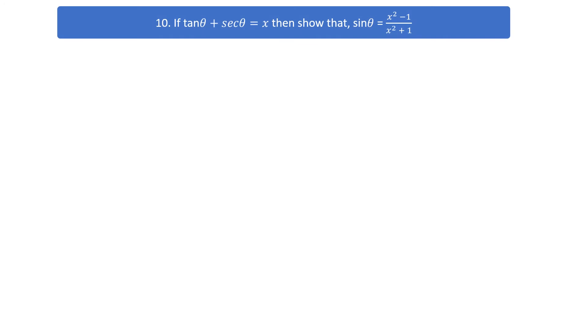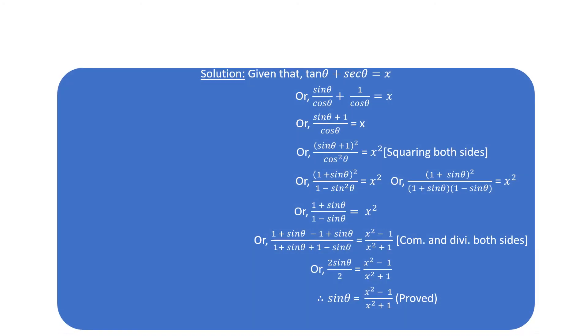Question number 10. If tan θ plus sin θ equals x, then show that sin θ equals x² minus 1 by x² plus 1. Solution: given tan θ plus sin θ equals x, and tan θ equals sin θ by cos θ, checking it equals 1 by cos θ.